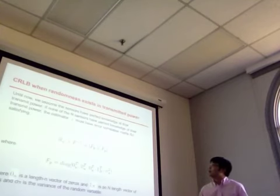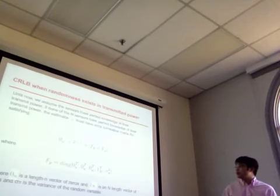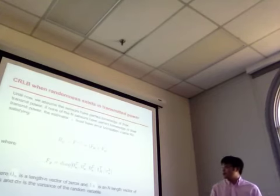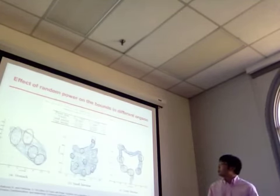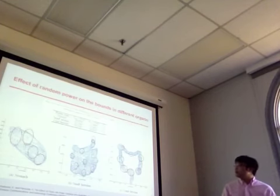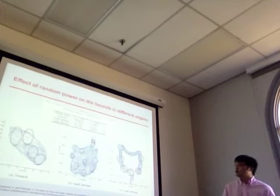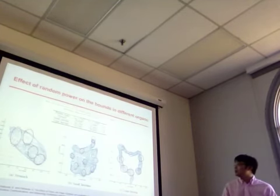We studied the effect of randomness in the transmitted power on localization accuracy. In this case, the Fisher information matrix is composed of two parts: the baseline Fisher information matrix and an additional term representing uncertainty caused by randomness in power. Results show that with 10 dB of randomness in transmitted power, the error increases by 7.1% in the large intestine, compared to 1.2% in the small intestine and 4.7% in the stomach — indicating that transmitted power randomness has more influence in the large intestine.